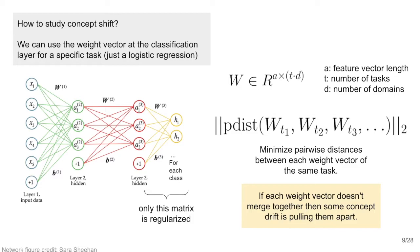Another way to study concept shift is to train a network where each dataset has their own task outputs. For 5 domains and 18 tasks, this results in 90 network logistic outputs. We call the weights of the logistic function for each task a task vector. We can regularize the vectors corresponding to the same task but over the different datasets to be similar using a squared error. Differences between these task vectors mean that for the same feature vector, a different prediction must be made, otherwise the difference would be 0 to minimize the regularization term. This implies that differences between the datasets during training have caused the network to diverge in its representation of a task and produce different results.